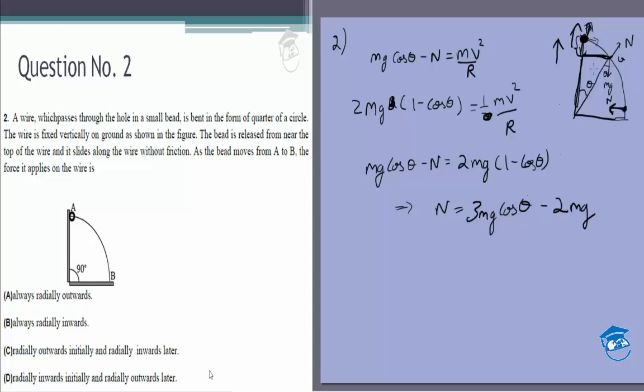That's not explicitly asked in the question, but just for the sake of explanation. So initially the normal force is radially outwards, finally the normal force is radially inwards. Some students might look at this and put in option C, but the actual answer is option D.